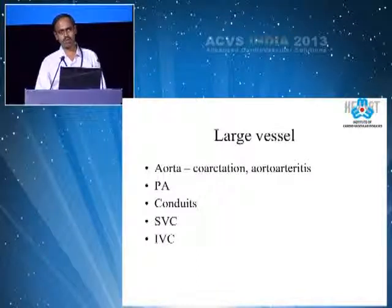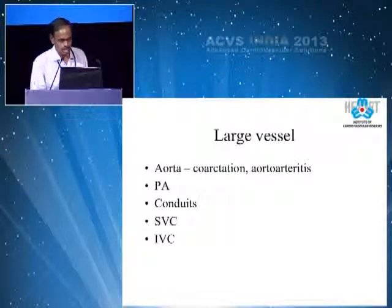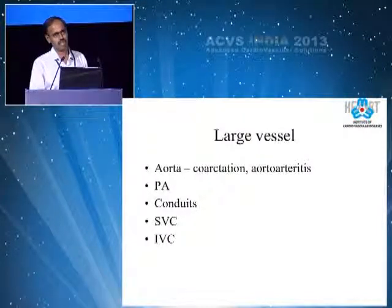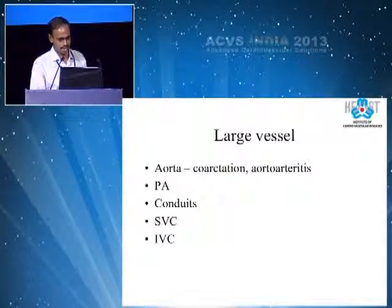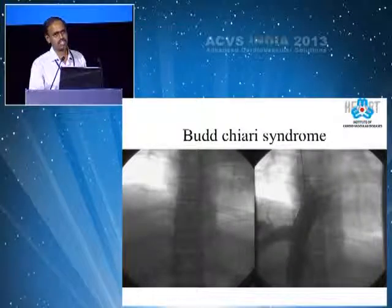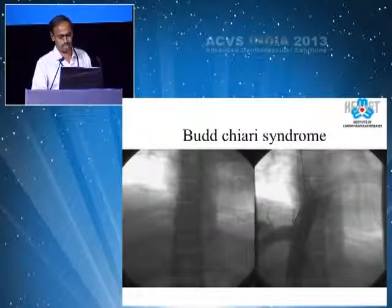I will probably go around the periphery and then finally come into the coarctation, where I will be stressing more. IVC stenting is primarily restricted to the distal end of the inferior vena cava where the IVC joins the right atrium, as in Budd-Chiari syndrome, and it can be stented. The only thing we need to ensure is that we put in quite a large stent so that there is no flow turbulence at all.